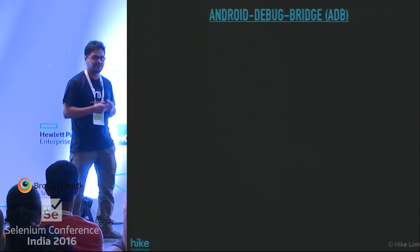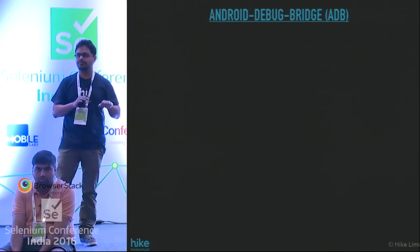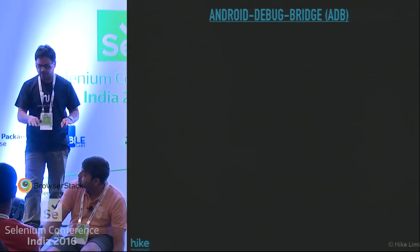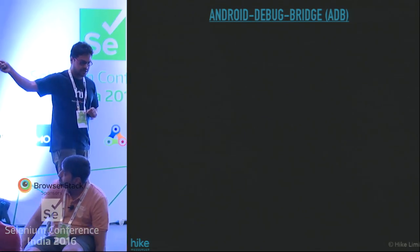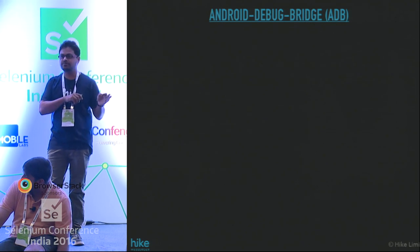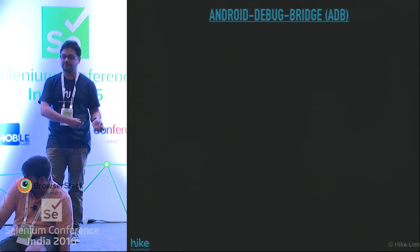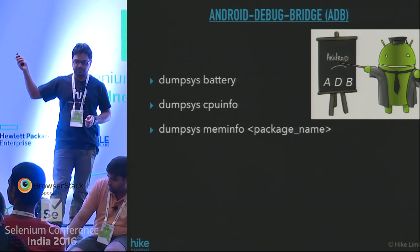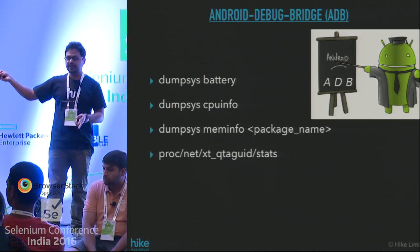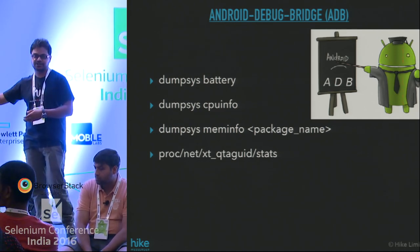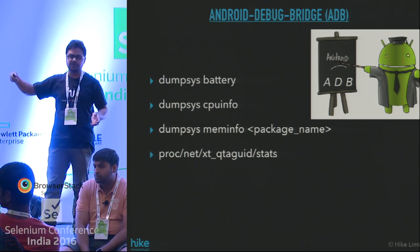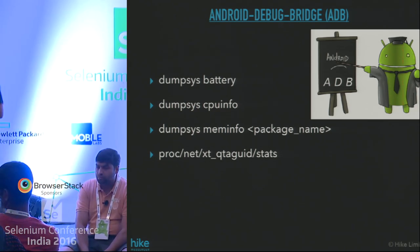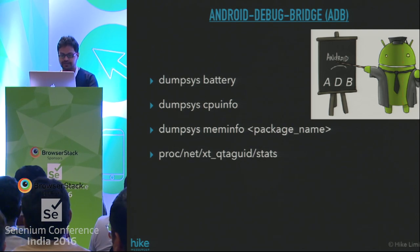To calculate these values, the base that most tools rely on is ADB — Android Debug Bridge — which provides commands to get readings directly from the kernel level. We have: `dumpsys battery` for battery, CPU info, `dumpsys meminfo` with your package name for memory, and the file `/proc/net/xt_qtaguid/stats` which digs into networking files and tells you how many packets were received and sent. Let me shift to the terminal and show you what kind of readings these give.